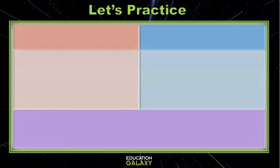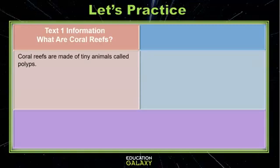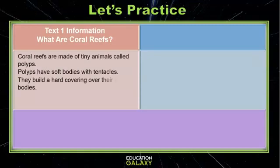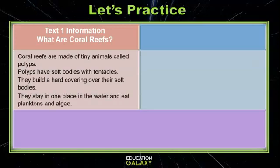Next, we use the graphic organizer to gather all this information in one place. From Text 1, we learned that coral reefs are made of tiny animals called polyps. They have soft bodies with tentacles. They build a hard covering over their soft bodies, and they stay in one place in the water and eat plankton and algae.